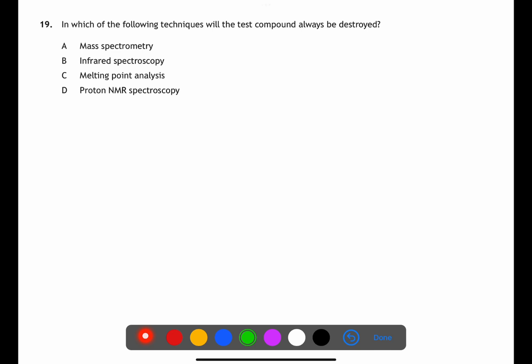Question 19 is looking at analytical techniques and in which test your compound will always be destroyed. In mass spectrometry you're using electron ionization to bombard your molecule and split it into fragments. This will destroy your molecule. In infrared spectroscopy you can use your molecule directly. In melting point analysis you take your solid and you can melt it however you can get it back again. In proton NMR it is dissolved into a solvent which you could evaporate off.